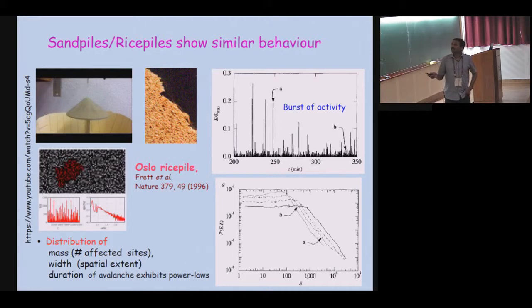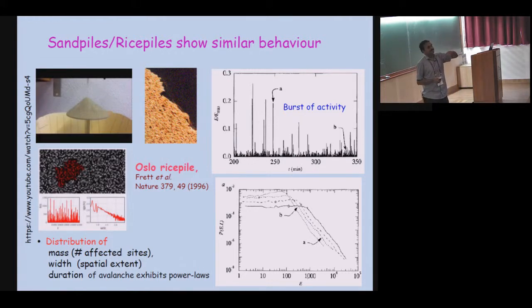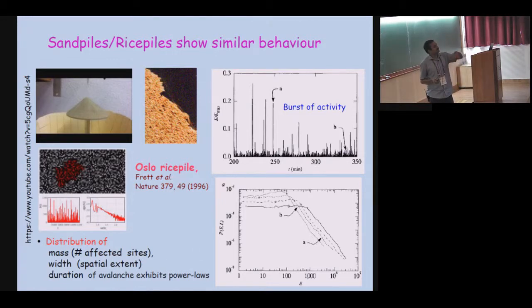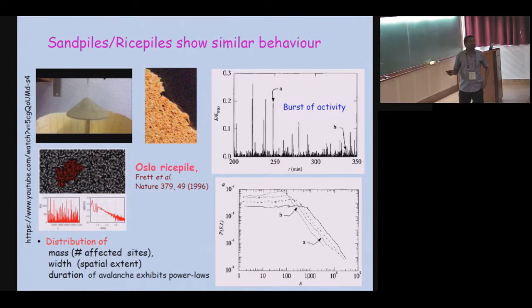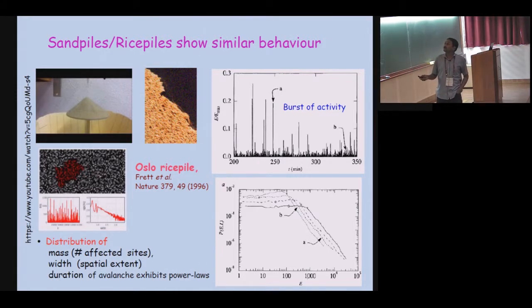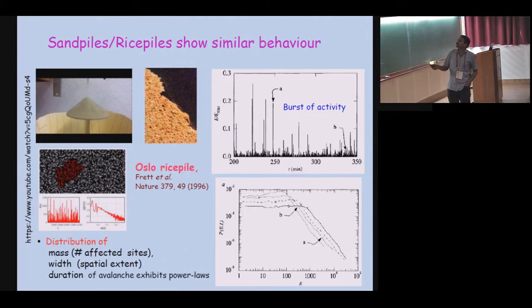What you want to model is sporadic large events. Sand piles or rice piles show similar behavior. If you start dropping sand grains, after some time it will make a conical shape. If you drop a grain on the pile, it will make some disturbances — sometimes very small, but if you drop one more grain, the disturbances can be as large as the system size. This is a scale-invariant, critical property. Experiments are also done in Oslo — these are called Oslo rice piles — and if you look at the bursts of activity, you find sporadic large events and power laws.